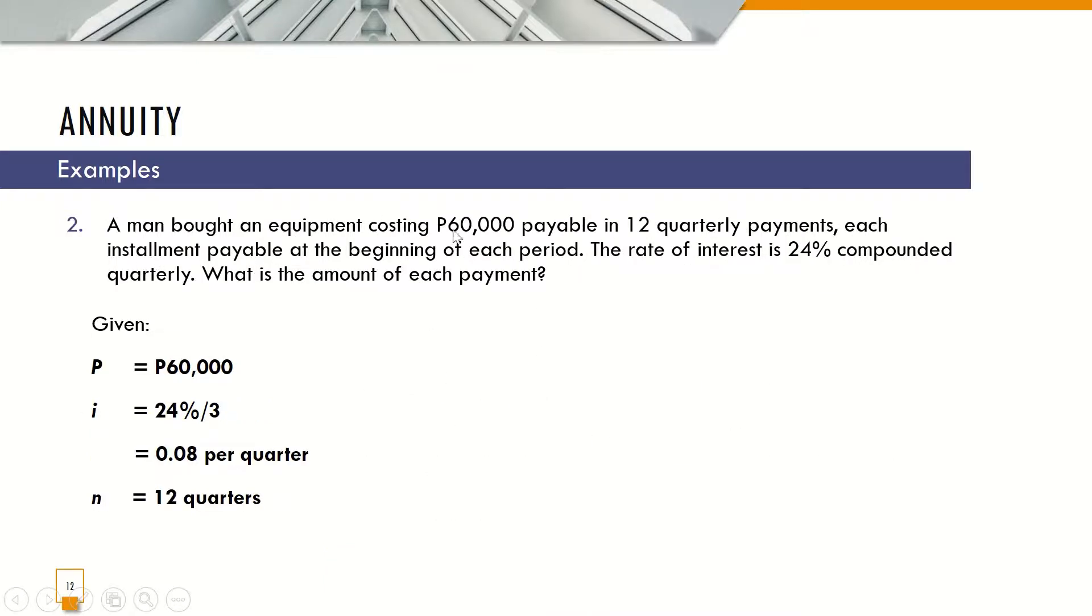Next example, a man bought an equipment costing 60,000 pesos payable in 12 quarterly payments. Each installment payable at the beginning of each period. It says here at the beginning of each period, meaning we are going to use the Annuity Due formula. The rate of interest is 24% compounded quarterly. What is the amount of each payment? P is given as 60,000. I is, we have to divide 24% by 3 because there are quarterly payments made. So per quarter, there is 0.08 or 8% interest per quarter. And then, there are 12 quarterly payments for our N.